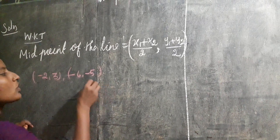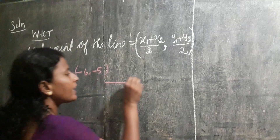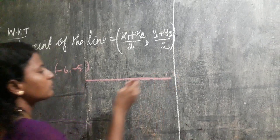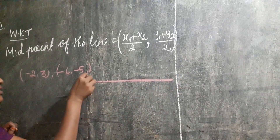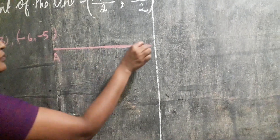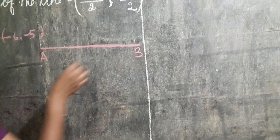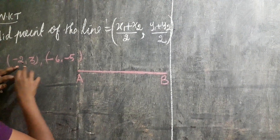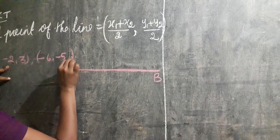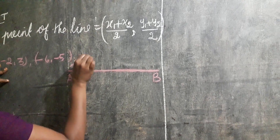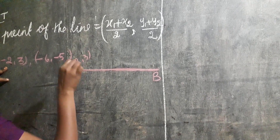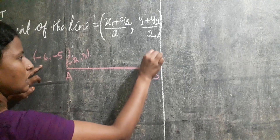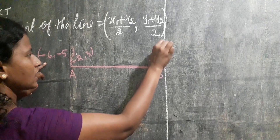Line segment means you have to draw one line segment. Draw the line segment and give the name A, B. Write the coordinates: A coordinates are minus 2, comma 3, and B coordinates are minus 6, comma minus 5.